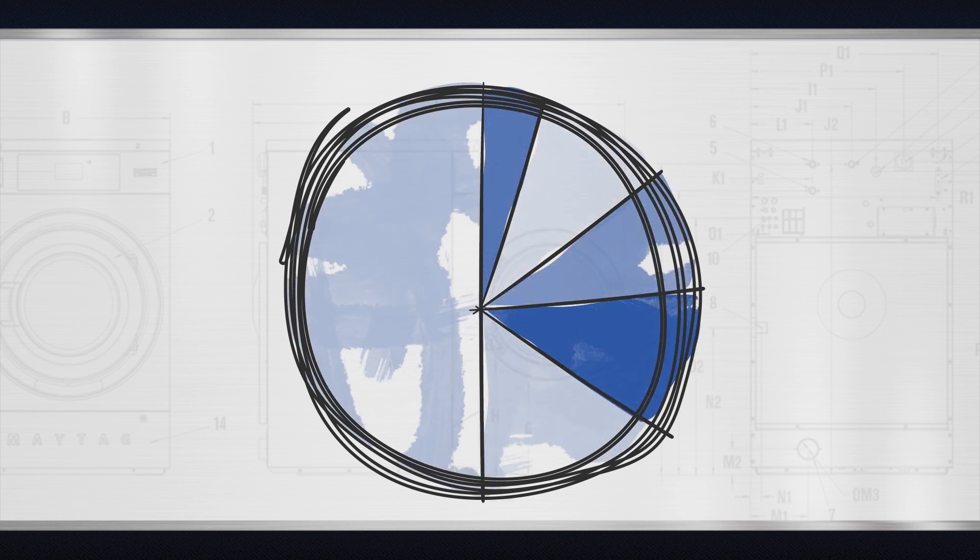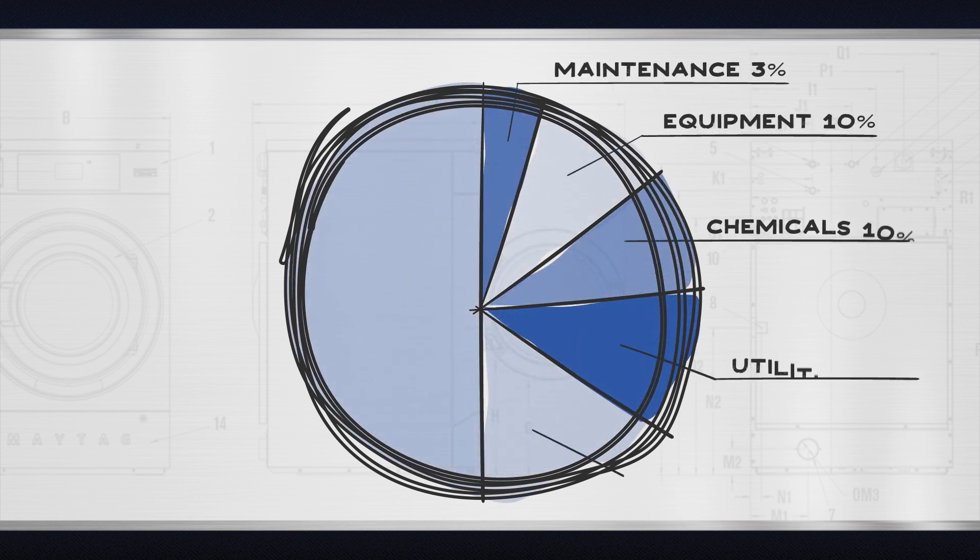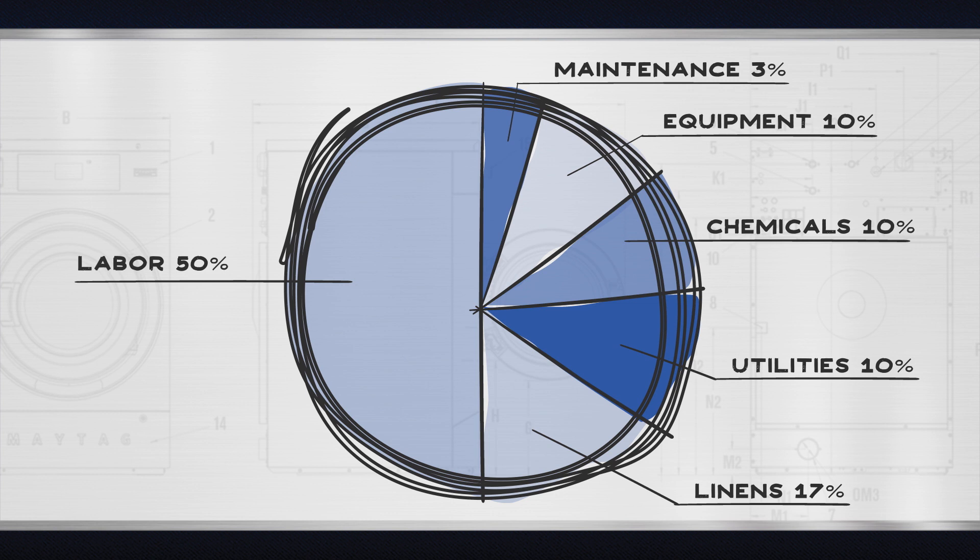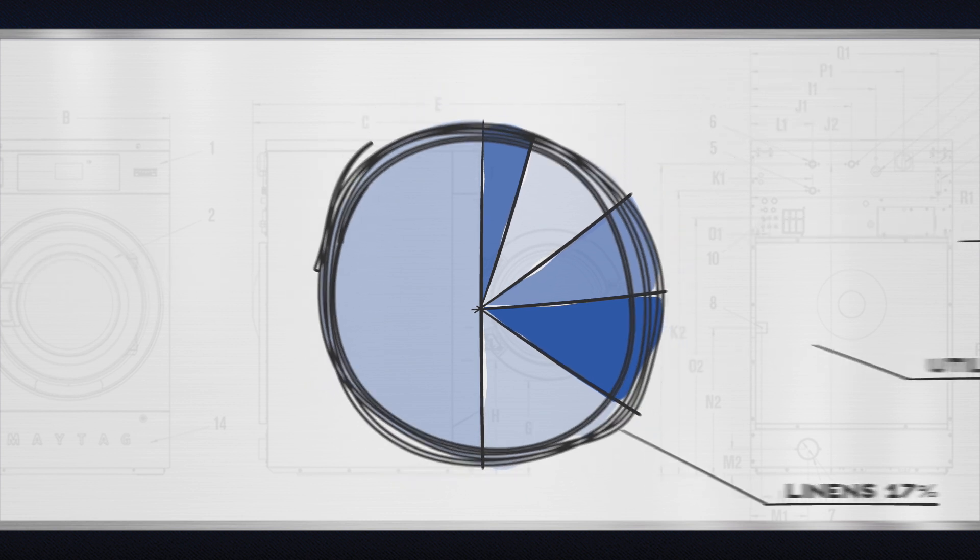It's crucial to the bottom line of your business that maximizing productivity is vital to keeping costs down, especially when considering the largest operating cost is labor, typically accounting for half of all expenses. Also keep in mind that drying time can be the biggest bottleneck in an OPL operation, as dryers tend to take longer to dry a load than washers take to wash it.